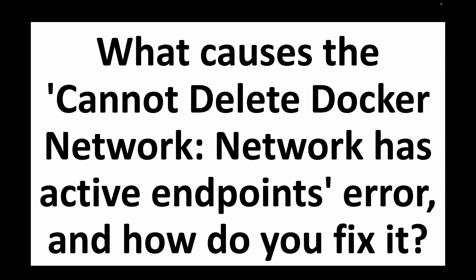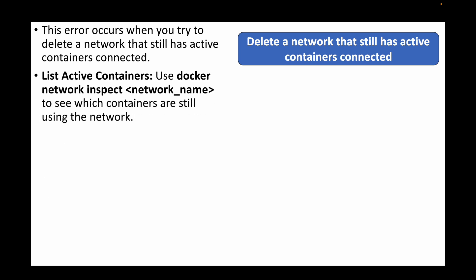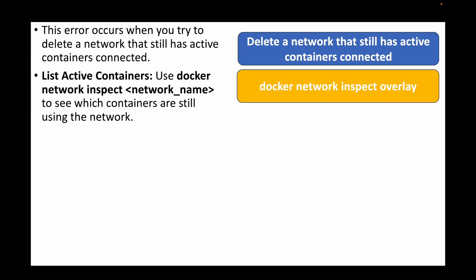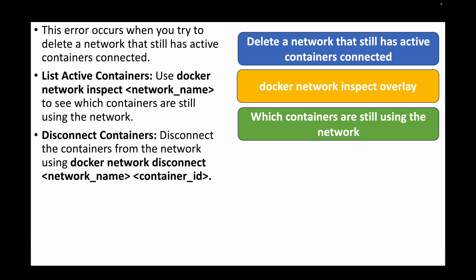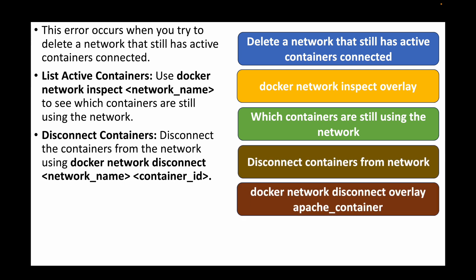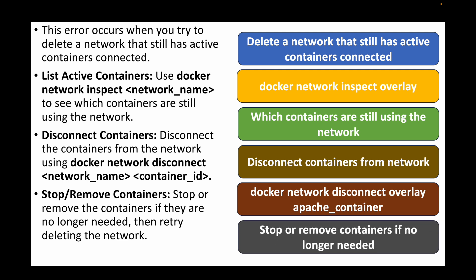The next question is: what causes the 'cannot delete Docker network — network has active endpoints' error? This occurs when trying to delete a network that still has containers connected to it. First, inspect the network with `docker network inspect <network_name>` to list all connected containers. Then disconnect them using `docker network disconnect <network_name> <container_name>`. Once done, stop and remove those containers if they are no longer needed — only then can you delete the network.